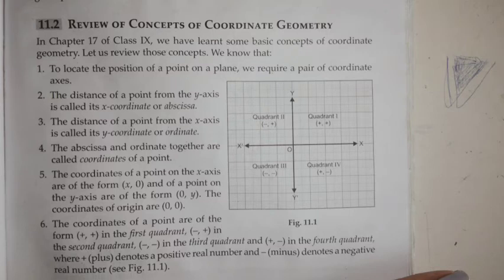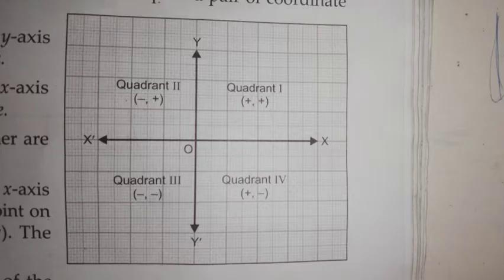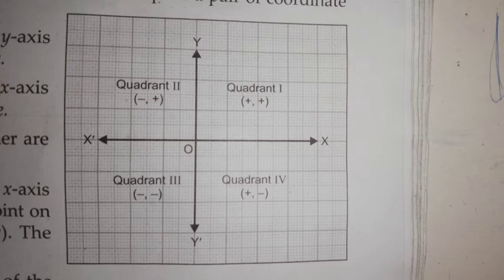The first point says, to locate the position of a point on a plane, we require a pair of coordinate axes. A plane has two directions: x-axis and y-axis. In the middle, right in the middle, we have the origin, and its ordinates are 0, 0.